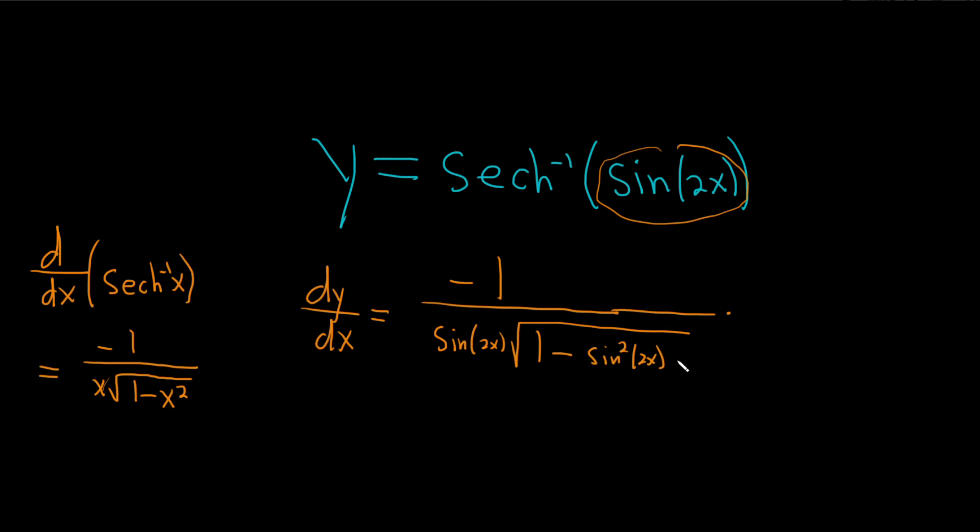Times the derivative of the inside. Well, the derivative of sine is cosine, so this is cosine of 2x, and then again times the derivative of the inside, so it's a double chain rule.